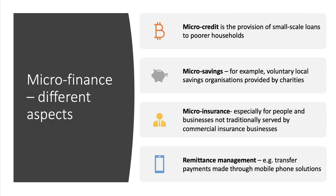Microfinance is essentially a way of improving financial access and financial inclusion. So it could be microcredit — a small-scale loan, particularly to poor households. It could be a platform for saving that you didn't have before. It could be microinsurance, for example for farmers, insuring against crop loss or the loss of livestock in the event of a flood or a drought. And microfinance is also increasingly about remittance management — the ability to make transfer payments within countries through mobile phone solutions, but also across countries.